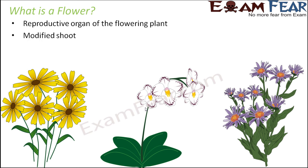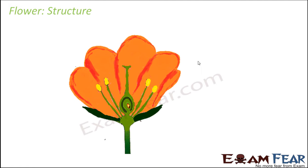Structure-wise or formation-wise, a flower is nothing but a modified shoot. It is a part of the shoot which gets modified to form a reproductive organ and perform the functions of a reproductive organ — that's how it becomes a flower. Let us now try to understand the structure of a flower and its different parts. Here on the screen you see a generalized picture of a flower. Different flowers have different shapes, colors, and structures, but more or less the parts of the flower remain the same for all flowers.